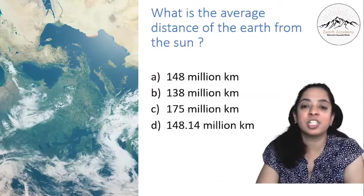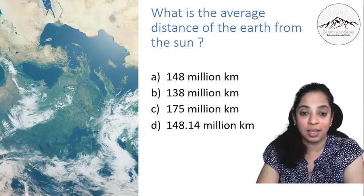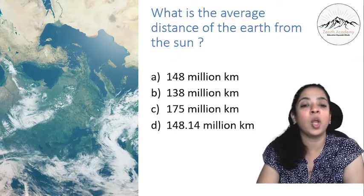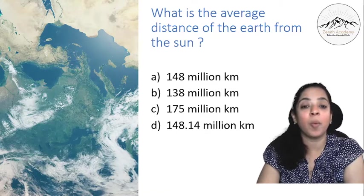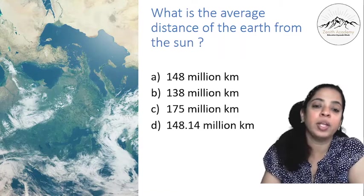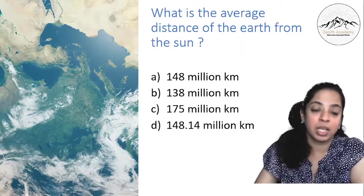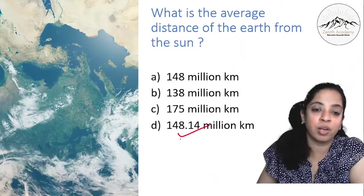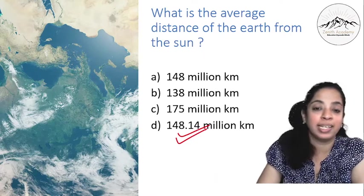What is the average distance of the earth from the sun? Is it 148 million kilometer, 138 million kilometer, 175 million kilometer or 148.14 million kilometer? So the answer is 148.14 million kilometer.